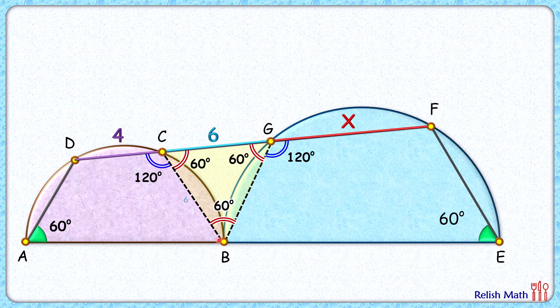And yes, CB length will be 6 and BG length will be 6. Now let's join D, B here. As AB is diameter, and thus this angle will be 90 degrees. By angle sum property, this angle will be 180 minus 60 minus 90 or 30 degrees.